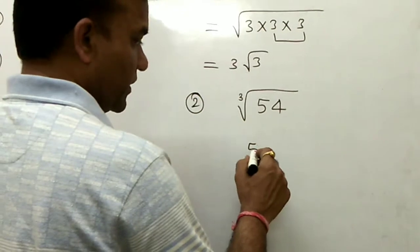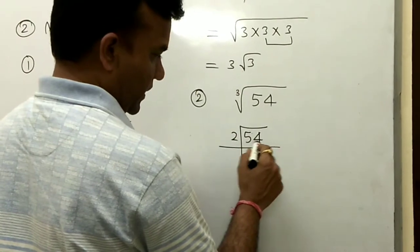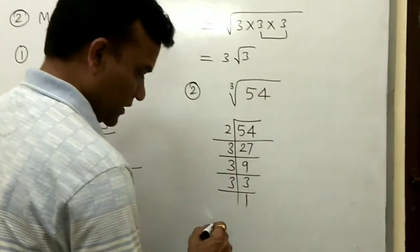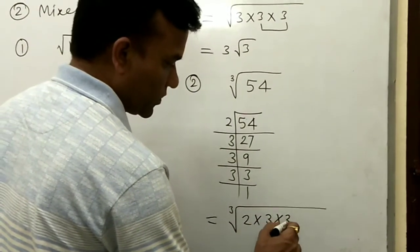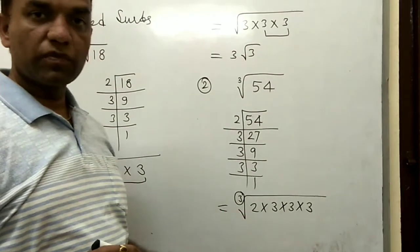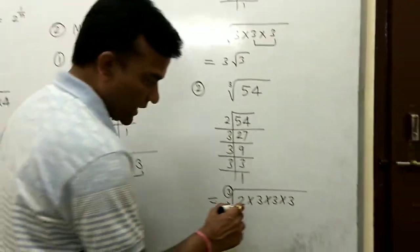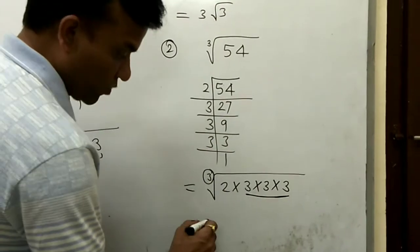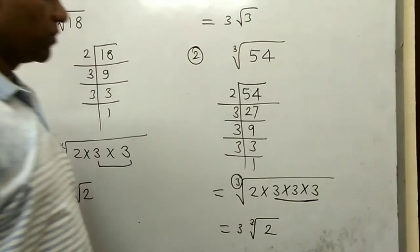For cube root of 54, find the prime factors: 54 = 2 × 27 = 2 × 3 × 3 × 3. Write all factors inside: 2 × 3 × 3 × 3. Now the power is 3, so look for groups of three identical factors. The three 3s form a group of three, so 3 comes outside. The 2 remains inside once. So the answer is 3 cube root of 2. In this way, you can convert any number inside a root into a simple mixed surd form.